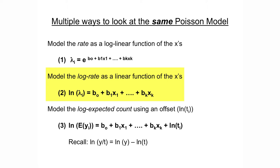We don't want to model the rate directly because our interpretations would be complicated — we wouldn't have a simple slope to interpret. So we instead want to model the log rate as a linear function of the x's, and then exponentiate the coefficients to get rate ratios. This is similar to logistic regression where we model the log odds and exponentiate to get odds ratios. The third equation — modeling the log expected count using an offset — is the way we actually model the log rate in statistical software.